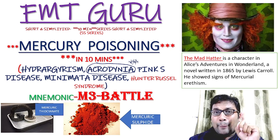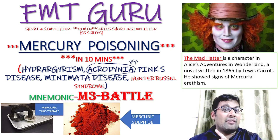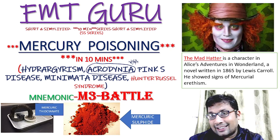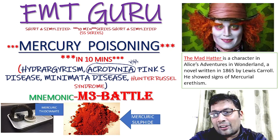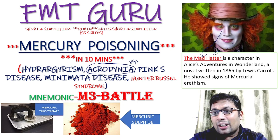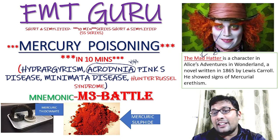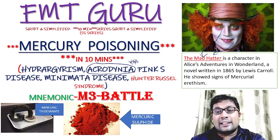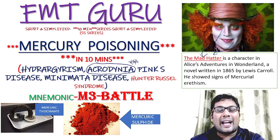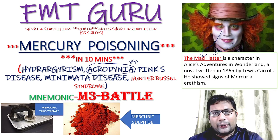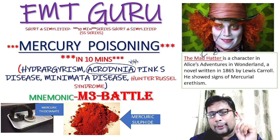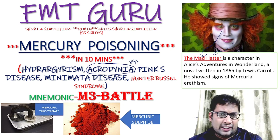Mercury poisoning is also known as Mad Hatter's disease — a very interesting one. The Mad Hatter is a character in Alice's Adventures in Wonderland, a novel written by Lewis Carroll in 1865, who showed signs of mercurial erythrism. So in summary, mercury poisoning is also known as hydrargyrism, acrodynia, Pink's disease, Minamata disease, Hunter-Russell syndrome, and Mad Hatter's disease — all are correct.